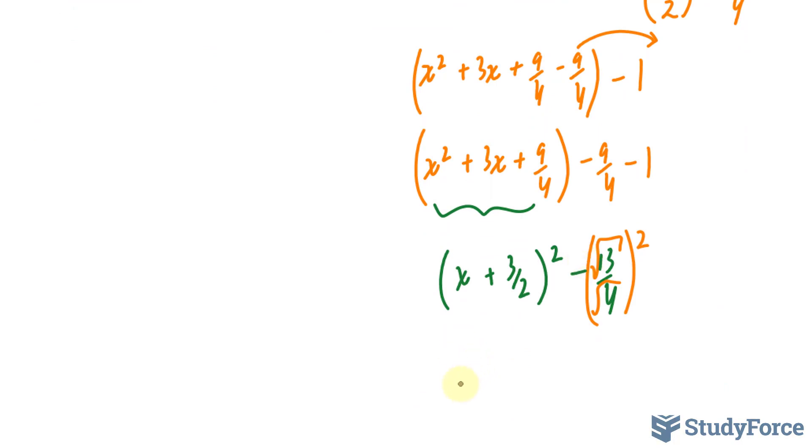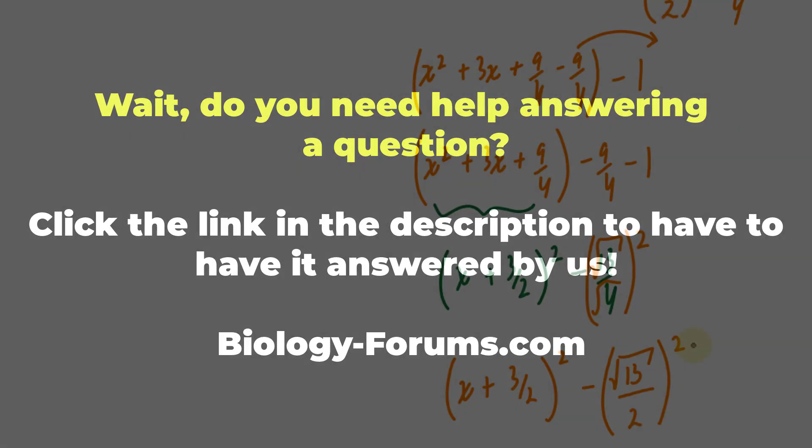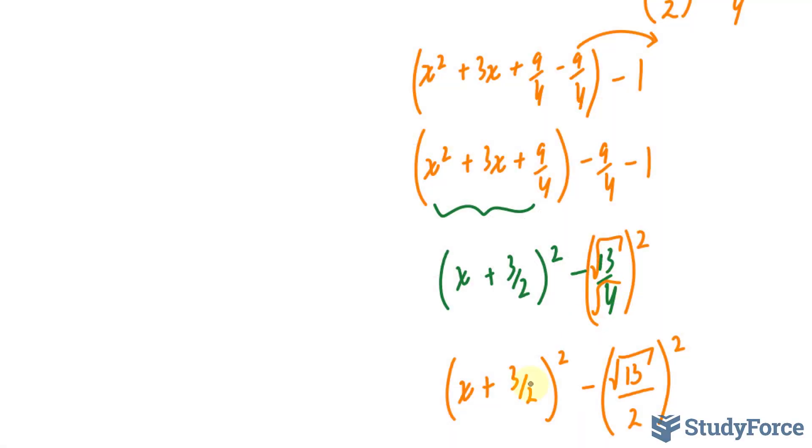So let's clean this up a little further. We have x plus 3 over 2 to the power of 2 minus the square root of 13 over 2 to the power of 2. I just took the square root of 4 and that's 2. Now we have the format u squared minus a squared.